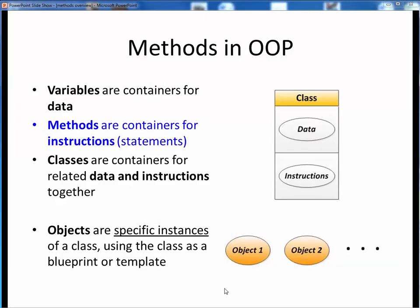As we said in an earlier lecture, methods are one of the three main types of containers in object-oriented programming, or OOP. We said that variables were containers for data, so now methods are containers for instructions or statements in programs. We also said that classes in OOP were containers as well, and that they bundled together the related data and instructions for some real-world or abstract software things.